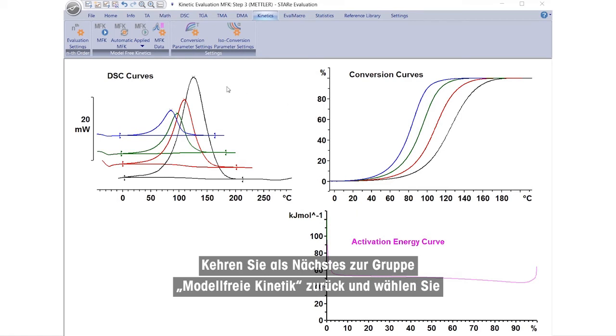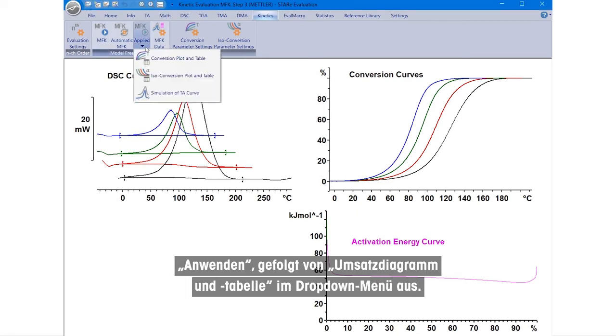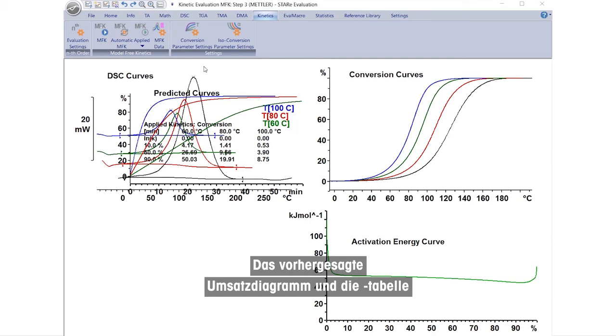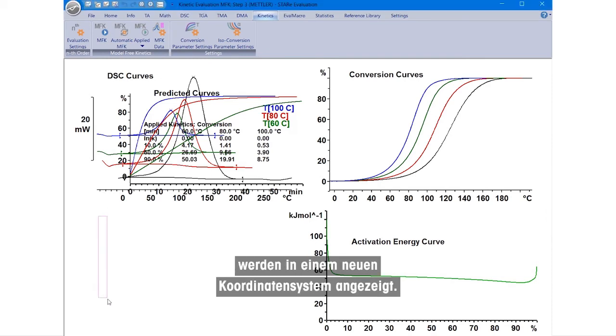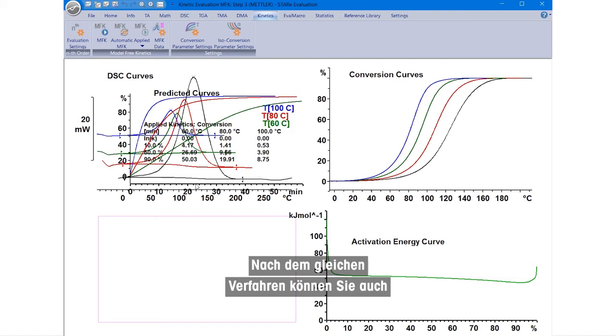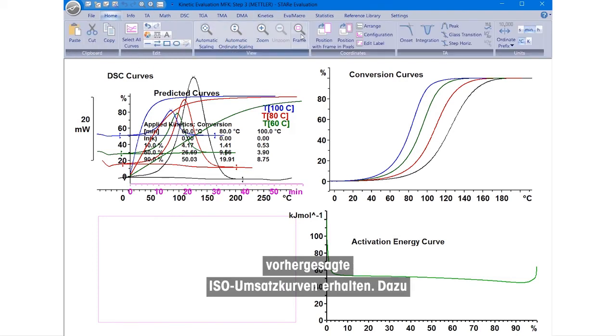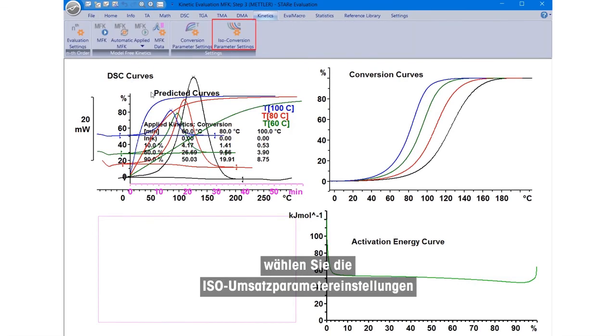Next, return to the Model Free Kinetics group and select Applied, followed by Conversion Plot and Table from the drop-down menu. The predicted conversion plot and table is displayed in a new coordinate system. Following the same procedure, you can also obtain predicted ISO conversion curves by selecting ISO Conversion Parameter Settings and entering the desired times.